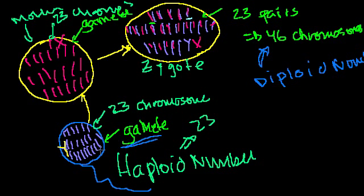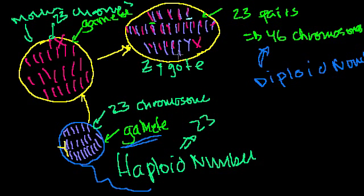Gametes — which are either a sperm or an egg — have the haploid number. They merge, and then you get a zygote, which is that very first cell with the potential to turn into a person, and it has a diploid number of chromosomes.